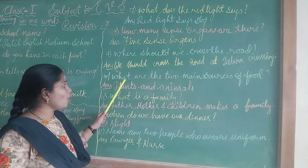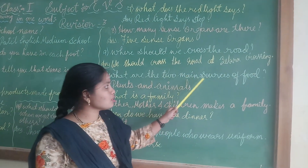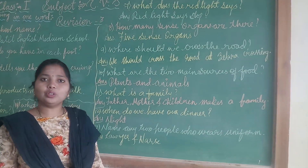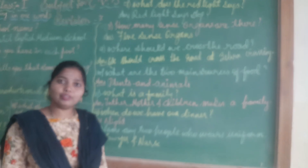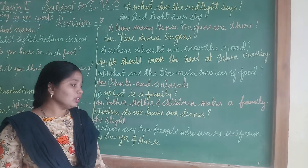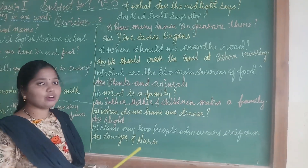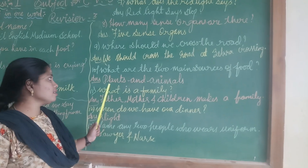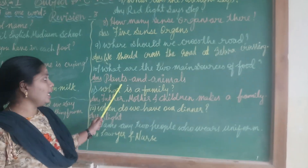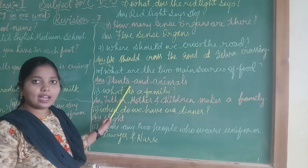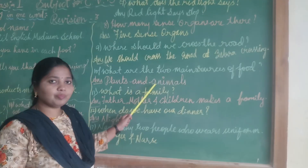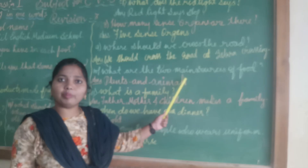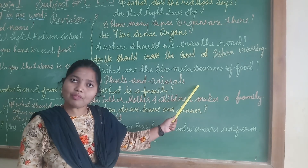Next: What are the two main sources of food? The two main sources of food are plants and animals. These are the two main sources of food.